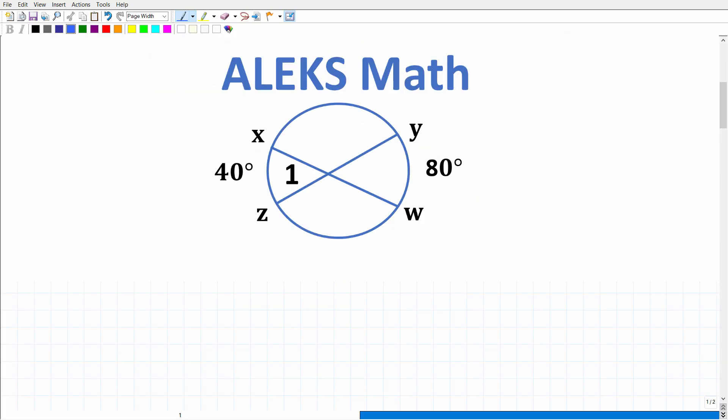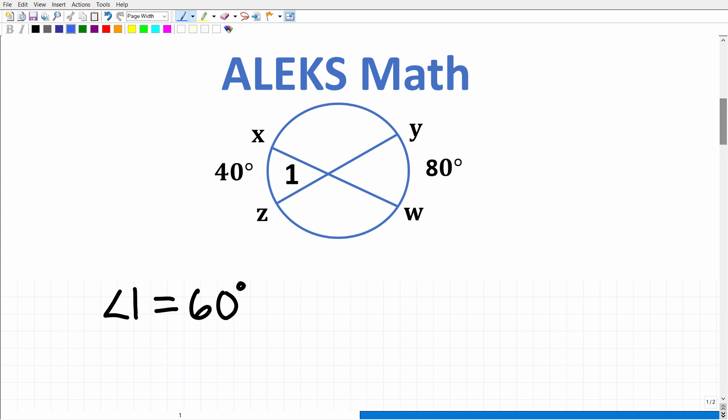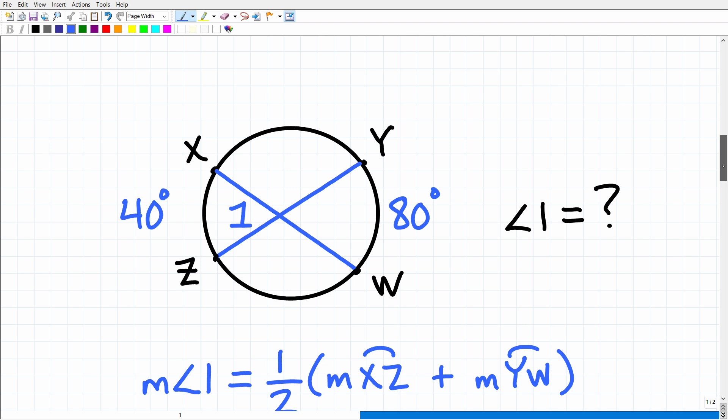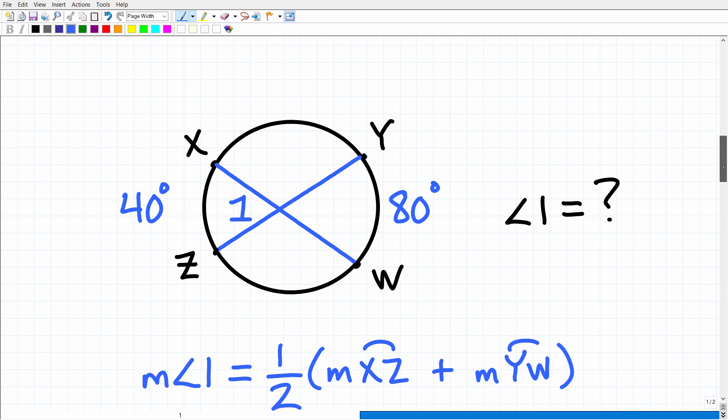So angle 1 is equal to what? Well, angle 1 is equal to 60 degrees. This is not that difficult. The key to doing this problem is knowing a formula.